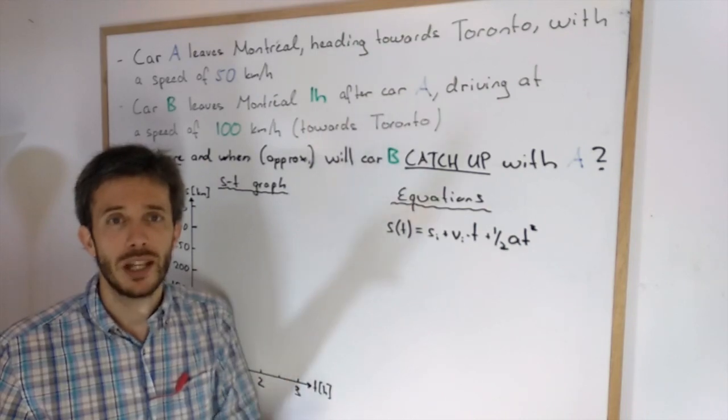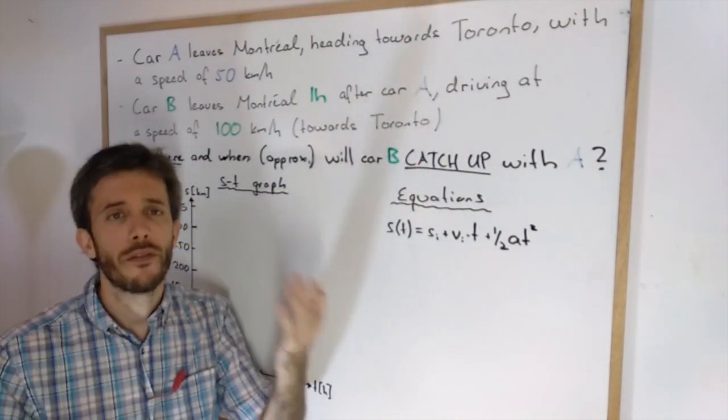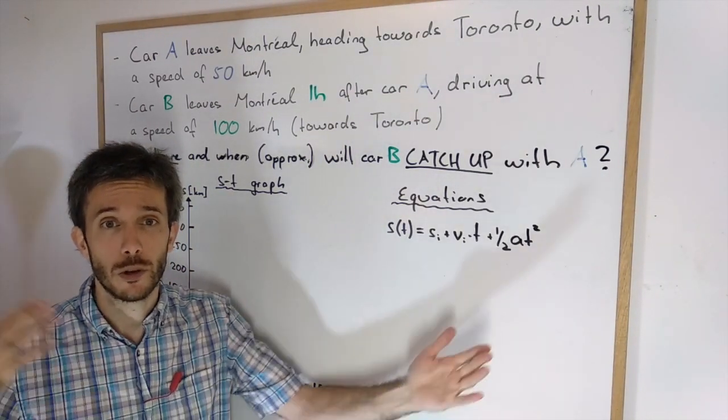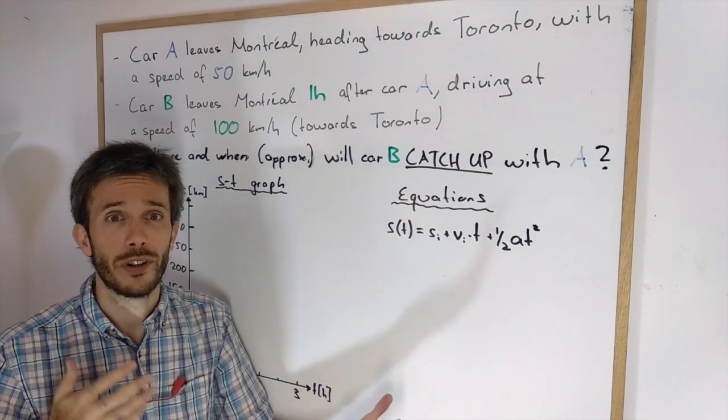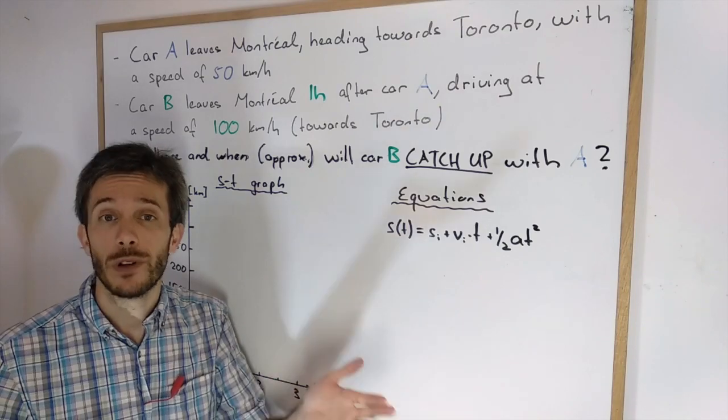A typical type of kinematics problem is the so-called catch-up problem. It can have different variations, but in the end it's always two objects moving on different paths and the question is where and when do they meet.